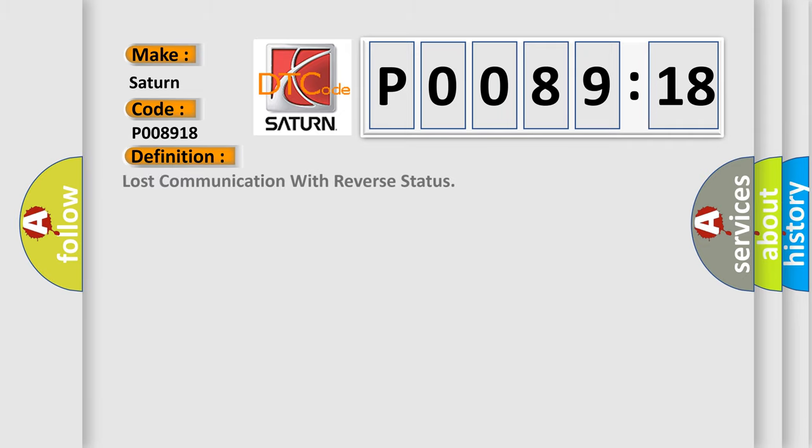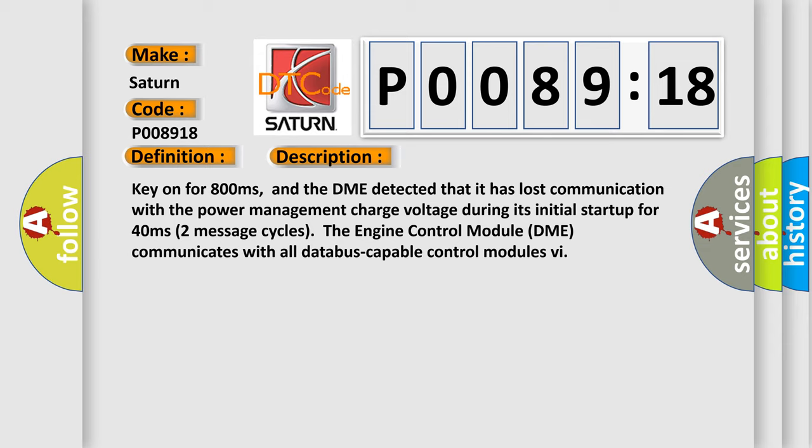The basic definition is lost communication with reverse status. Here is a short description of this DTC code. Key on for 800 milliseconds, and the DME detected that it has lost communication with the power management charge voltage during its initial startup for 40 milliseconds, two message cycles.